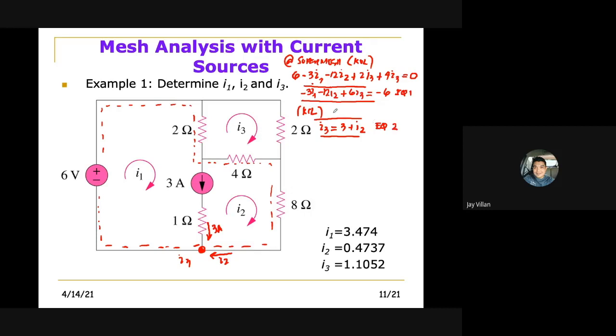Don't forget the third mesh. At mesh 3, again simply adding the resistors: 4 + 2 + 2 is -8i3 + 2i1 + 4i2 equals zero. So this is now our equation 3. Three linear equations with three unknowns.